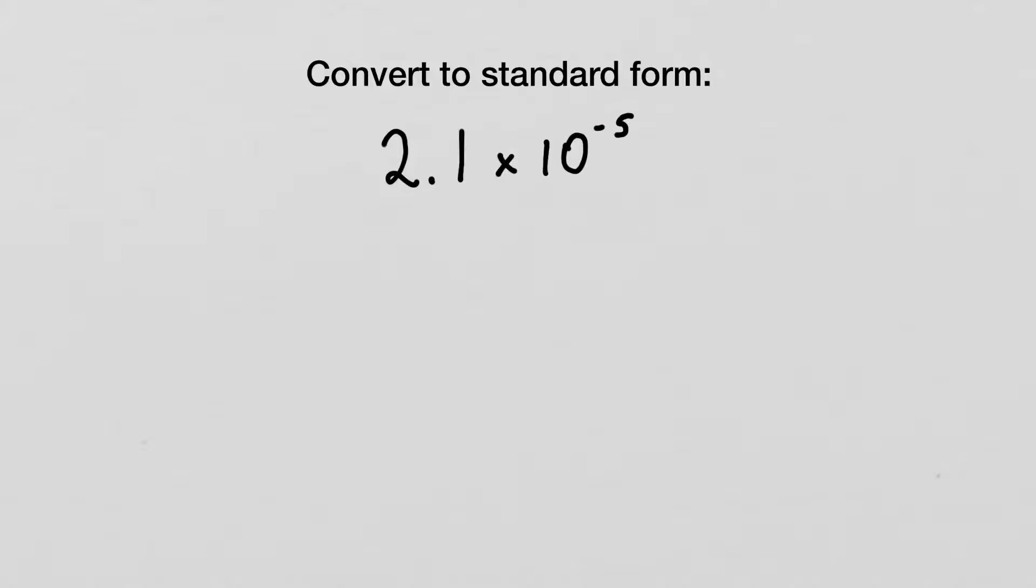To do this, I'm going to have to jump the decimal five times. The question is, am I going to jump it to the right or to the left? Well, in other videos we've talked about the negative number here reminds us that it's a small number, because negative numbers are smaller than positive numbers.